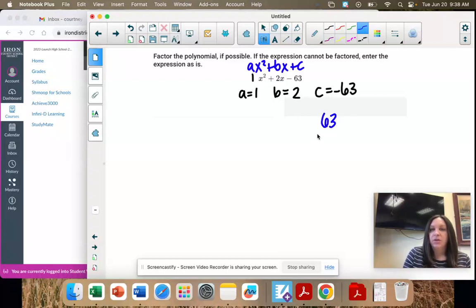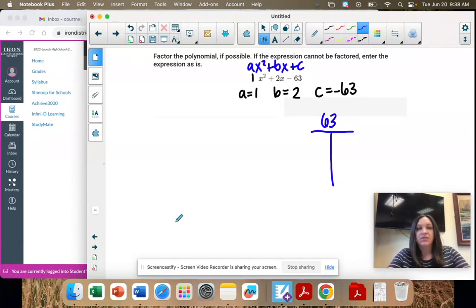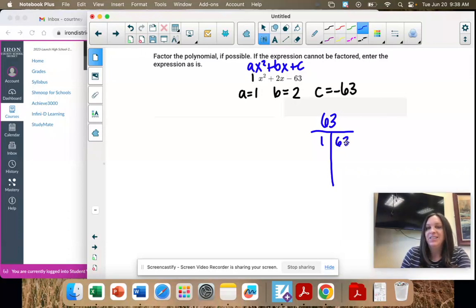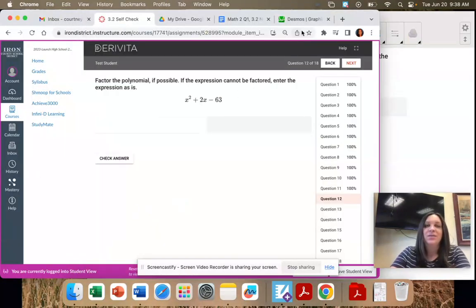So I'm going to ignore the negative for now and just find all factors of 63. So the first one is the easiest, right? 1 and 63.